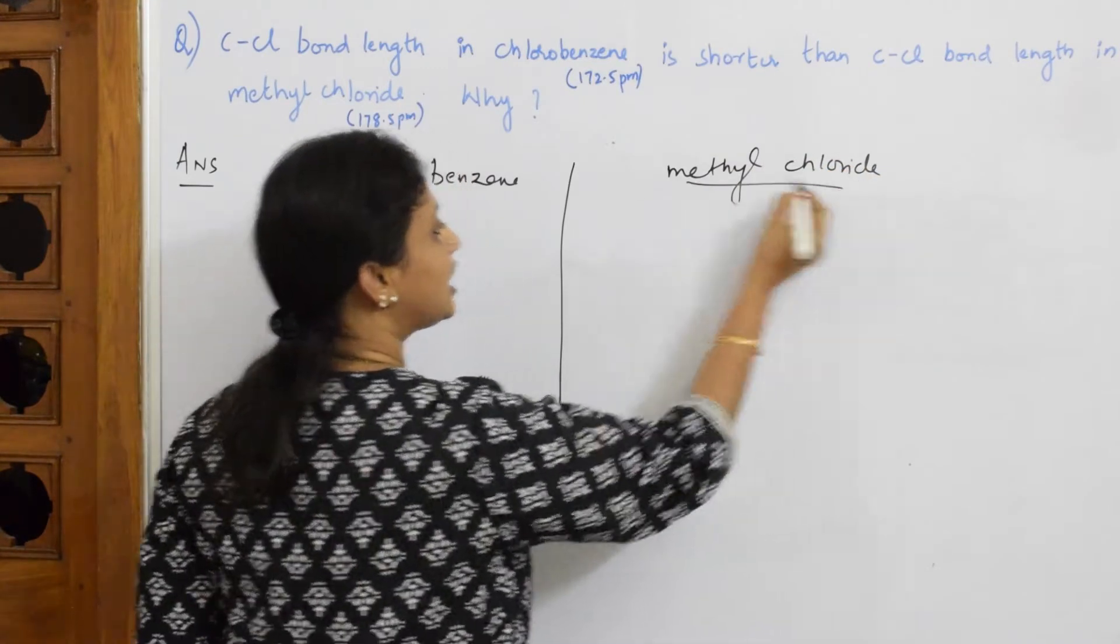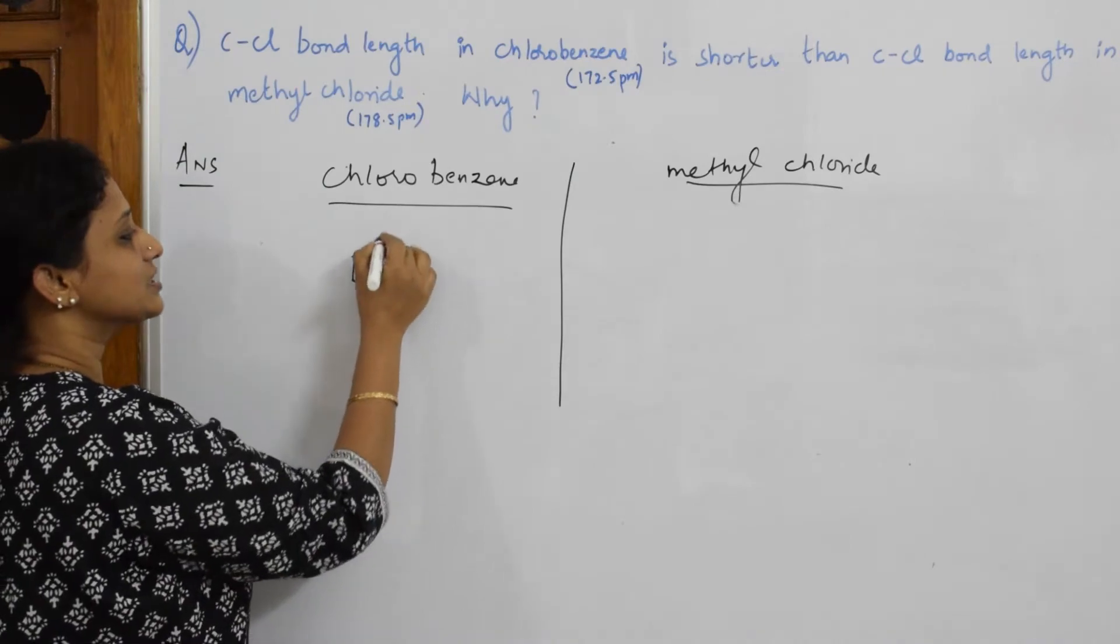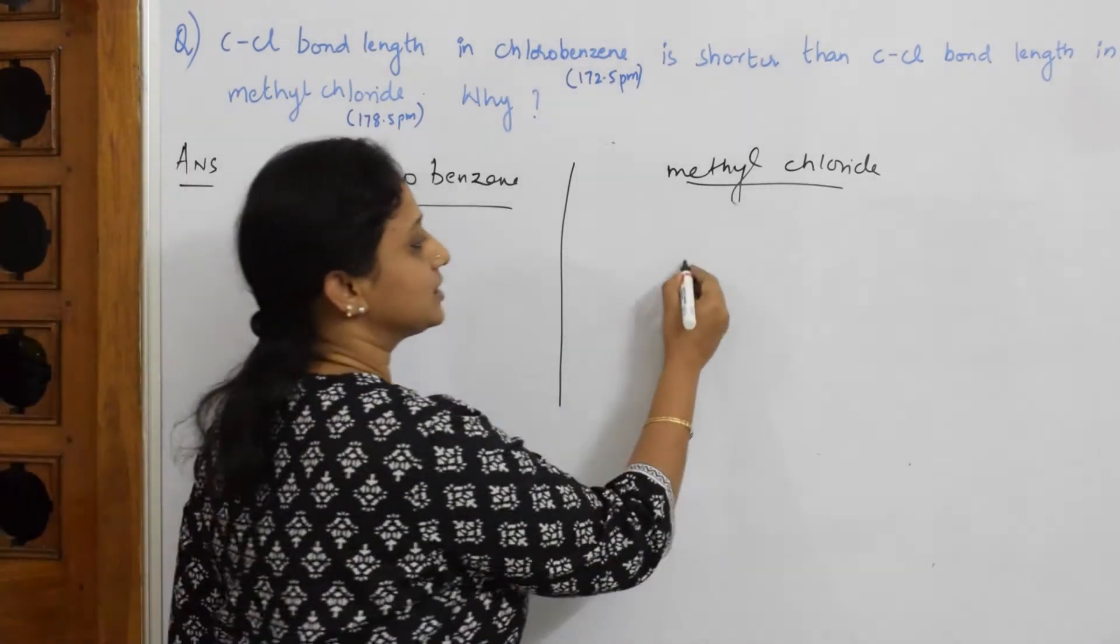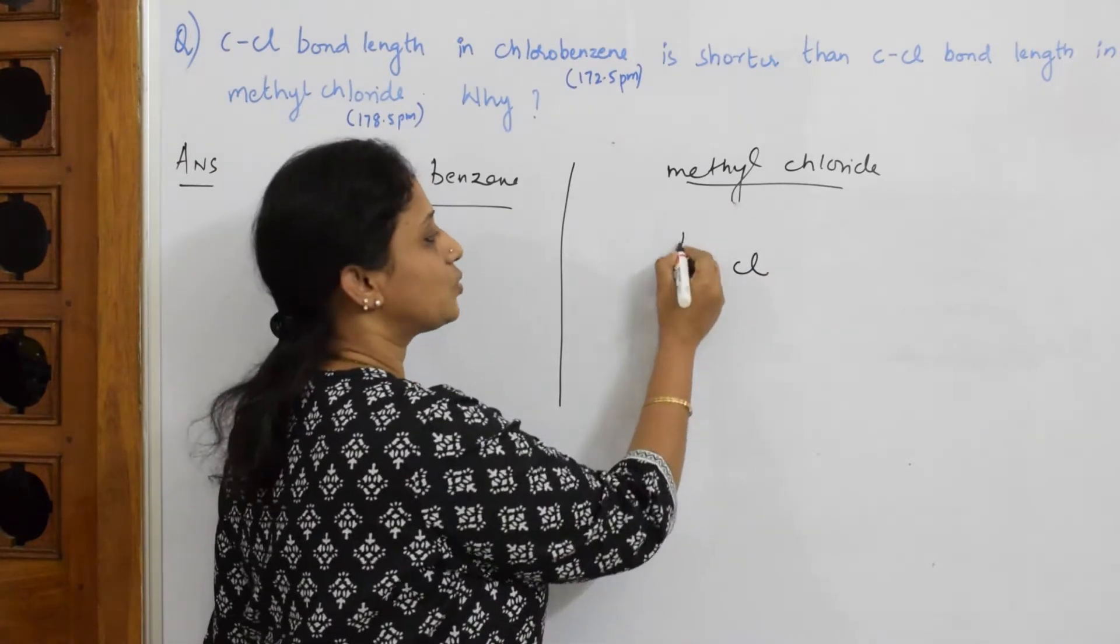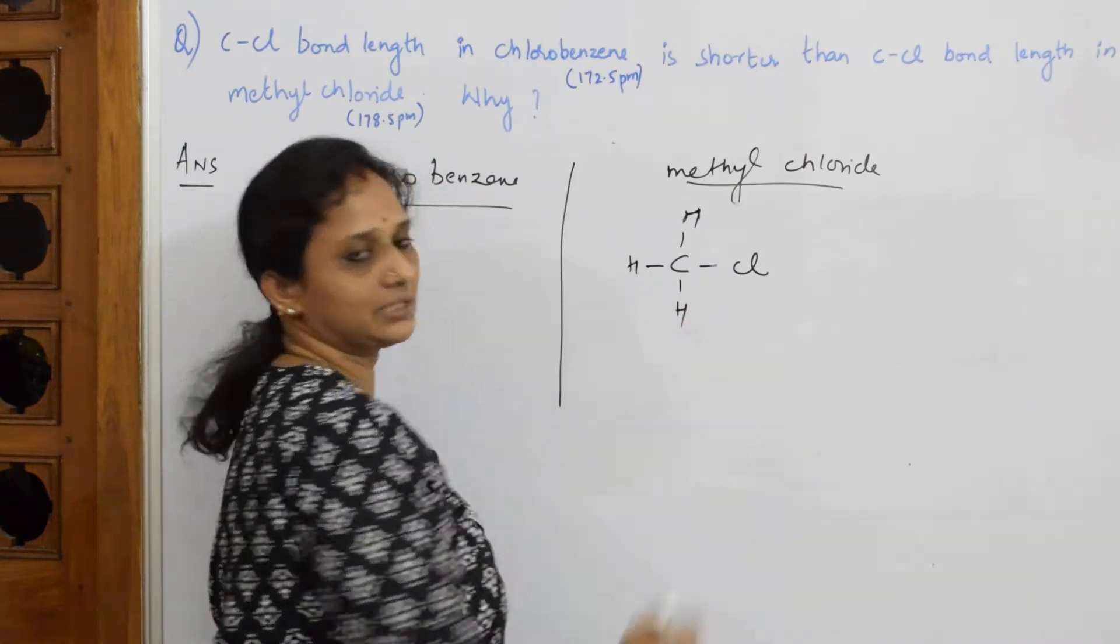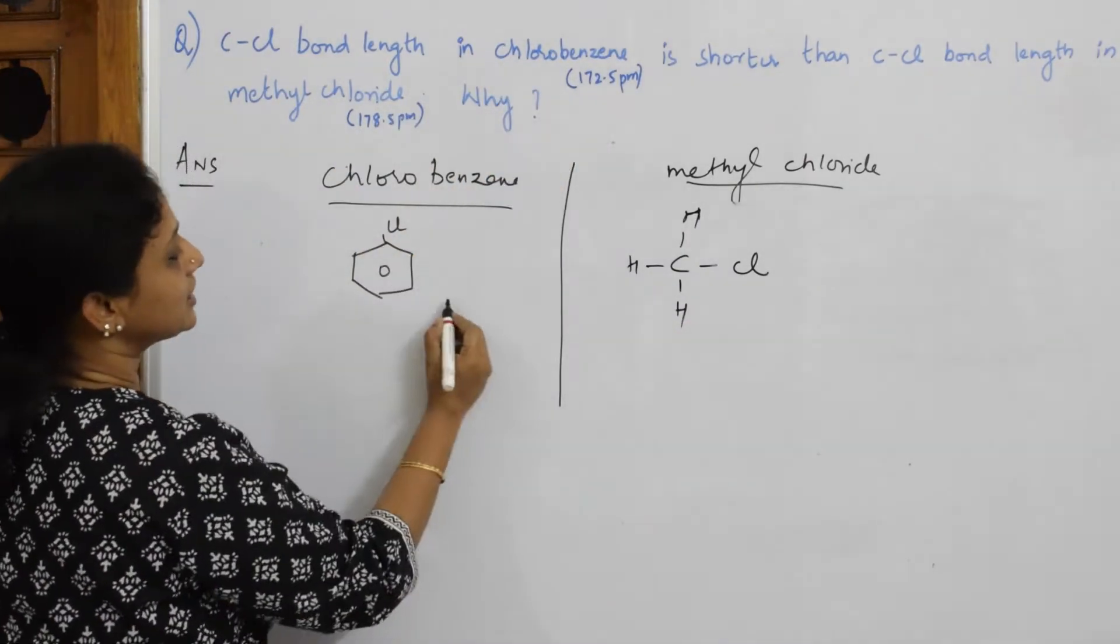Let us write the formula for both and see how to reason the question. In this particular case, chlorobenzene, this is chlorobenzene. And in this particular case it is methyl chloride. So one carbon, chlorine attached, then one hydrogen, one more hydrogen, one more hydrogen. Methyl chloride, done.